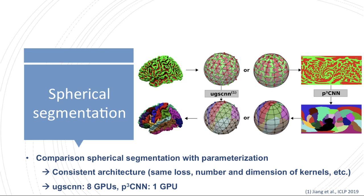Traditional CNNs for voxel grid-based segmentation tasks on the other hand are already well established and have been optimized to a great extent over the last years. In addition they are much more lightweight than the spherical CNNs, and we were therefore wondering how well a parameterization network would perform in comparison to a spherical network — that is basically our comparison between the P-Cube CNN and the spherical UGS CNN.